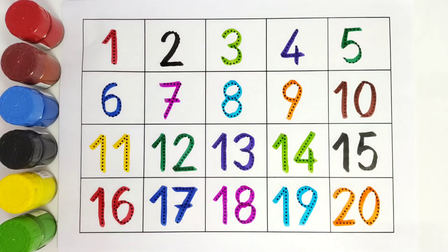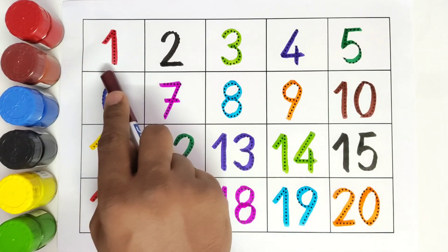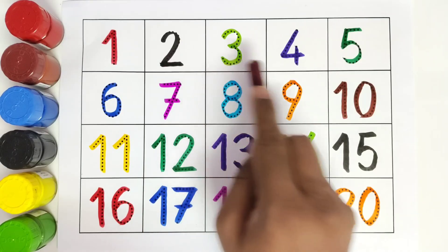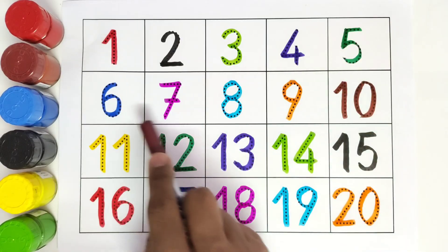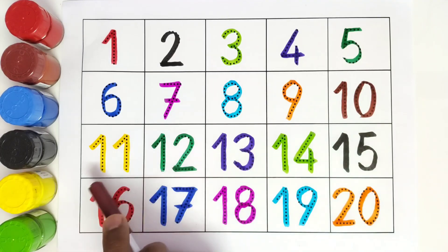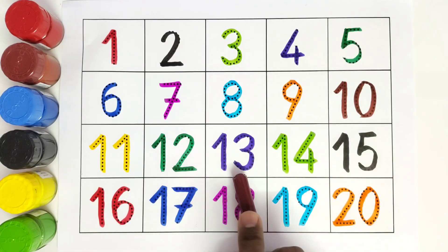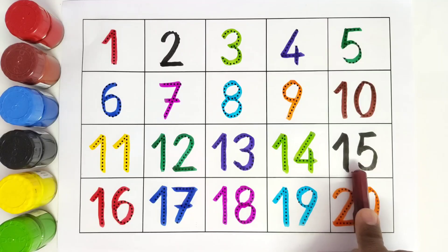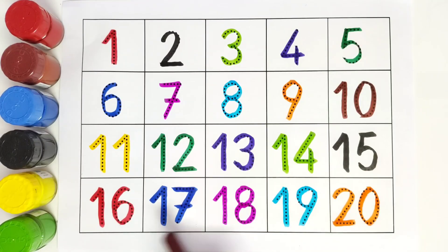So kids, we will be reading these numbers: one, two, three, four, five, six, seven, eight, nine, ten, eleven, twelve, thirteen, fourteen, fifteen, sixteen, seventeen, eighteen, nineteen, twenty.